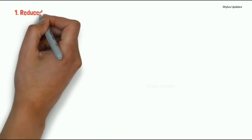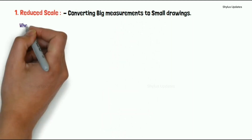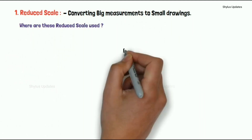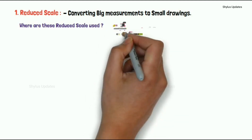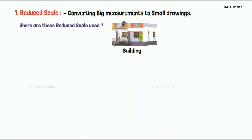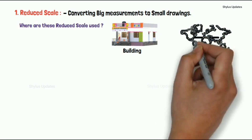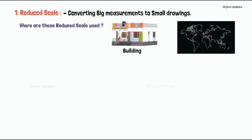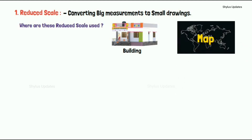The first type is reduced scale. Reduced scale means converting big measurements to small drawings. These reduced scales are used in building maps — a building is a big measurement and we can't draw it on a small A4 paper, but using this scale we can convert it to small drawings. Another example of reduced scale is a map, such as a world map. We know the world is a very large area, and using reduced scale we can convert it to a small drawing.